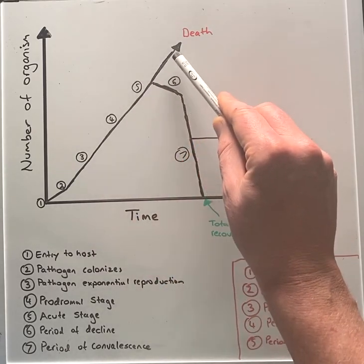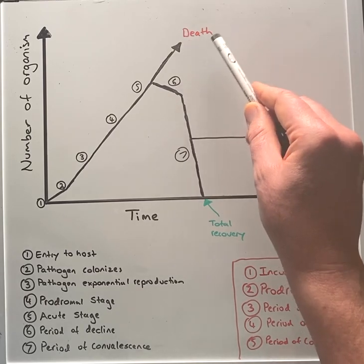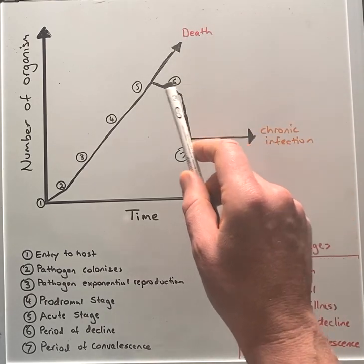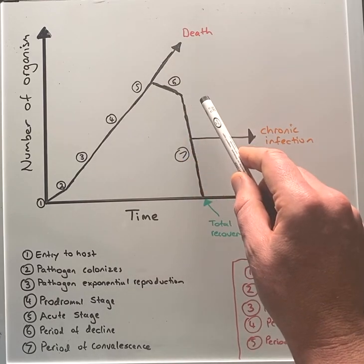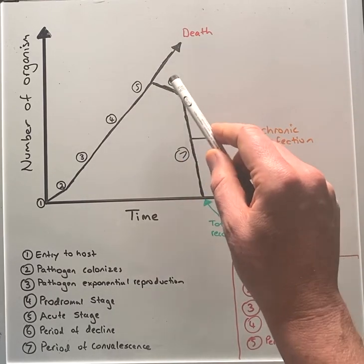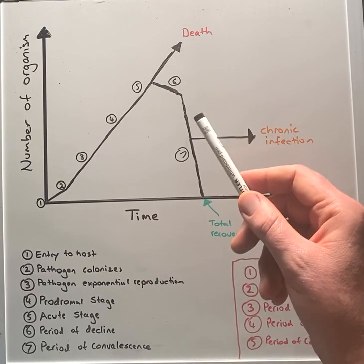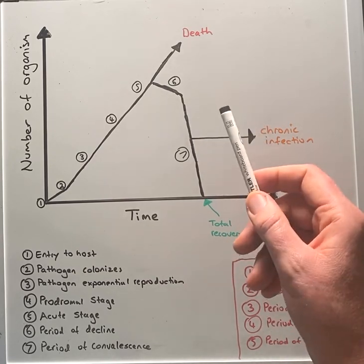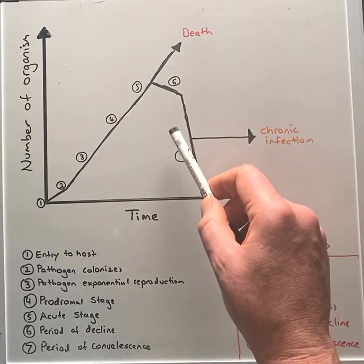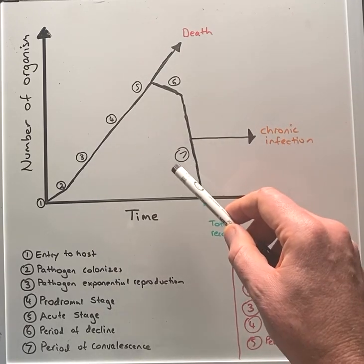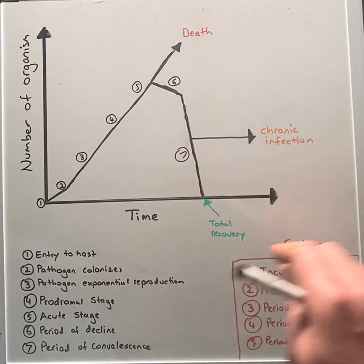If it doesn't resolve, it will increase and manifest into septicemia and then finally death. In step six, the number of pathogens in the body will start decreasing and the signs and symptoms will begin to decline. However, during the period of decline, the host is susceptible to secondary infection and ongoing injury, which can manifest as a chronic infection. Finally, step seven, the period of convalescence — the host generally will return to normal and make a full recovery.